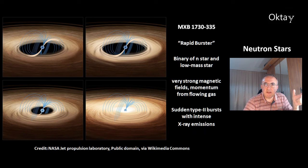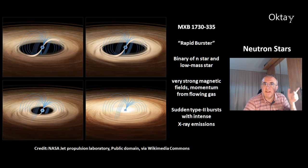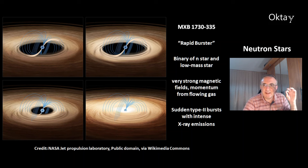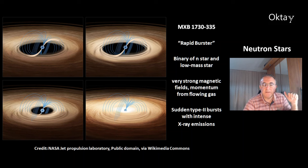This is another neutron star, MXP 1730-335, also called the Rapid Burster. This is a binary of a neutron star and a low mass star — the low mass star cannot be seen in this picture. This object has very strong magnetic fields. It gets a lot of momentum from the gas that flows into the neutron star, and there are sudden type 2 bursts with intense X-ray emissions.